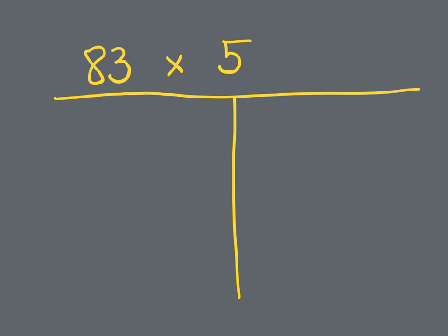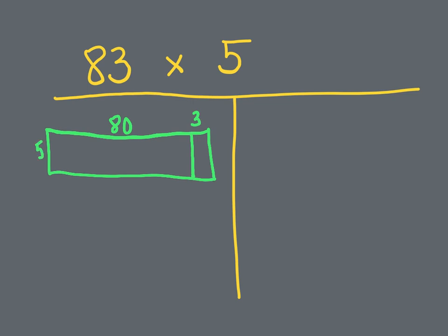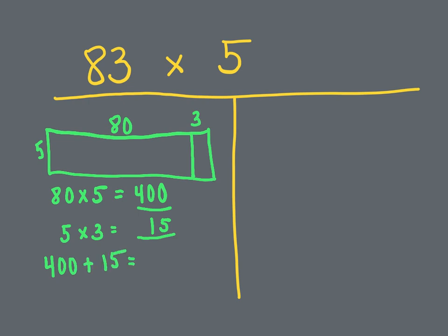83 times 5. We're going to set up using an area model. It's not to scale, but one side is bigger than the other: in the ones we have 3 ones, and in the tens we have 8 tens, which is 80. We're multiplying this by 5. So: 80 times 5 — 8 times 5 is 40, add on your 0 — gives us 400, our first partial product and first equation. Then 5 times 3 gives us 15, our second equation and second partial product. Adding the partial products: 400 plus 15 gives us 415, our main product.